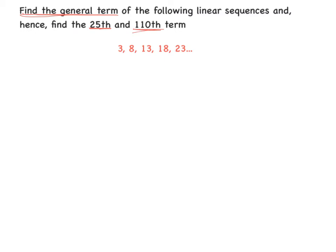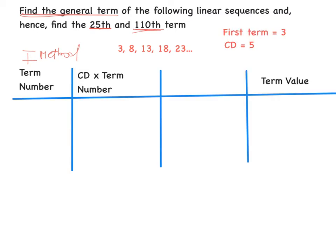There are two ways to find it — I'll show you both. The first method is the table. You need to lay out the table — learn this by heart. The first column is term number. The second column is CD multiplied by term number (CD stands for common difference). The last column is term value. We know the first term is 3 and the common difference is 5. So for the first column we have T1, T2, T3, T4.